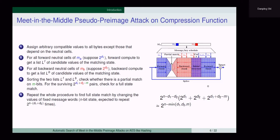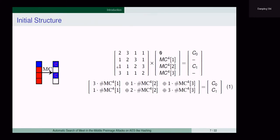The attack complexity is shown by this equation. To obtain a better attack, the minimum of the size of the neutral bytes and matching bytes should be maximized. Moreover, splice-and-cut and initial structure techniques are developed. Taking the Davies-Meyer model as an example, computation across the first and the last round is valid. Through the splice-and-cut technique, the starting point can be at an intermediate state.